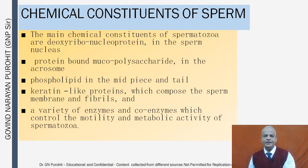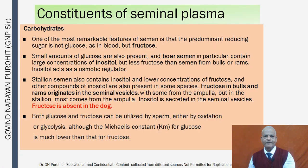The main chemical constituents of spermatozoa are: deoxyribonucleoprotein in the sperm nucleus; protein-bound mucopolysaccharide in the acrosome; phospholipid in the middle piece and tail; and keratin-like proteins composing the sperm membrane and fibrils. A variety of enzymes and coenzymes control motility and metabolic activity of the sperm.